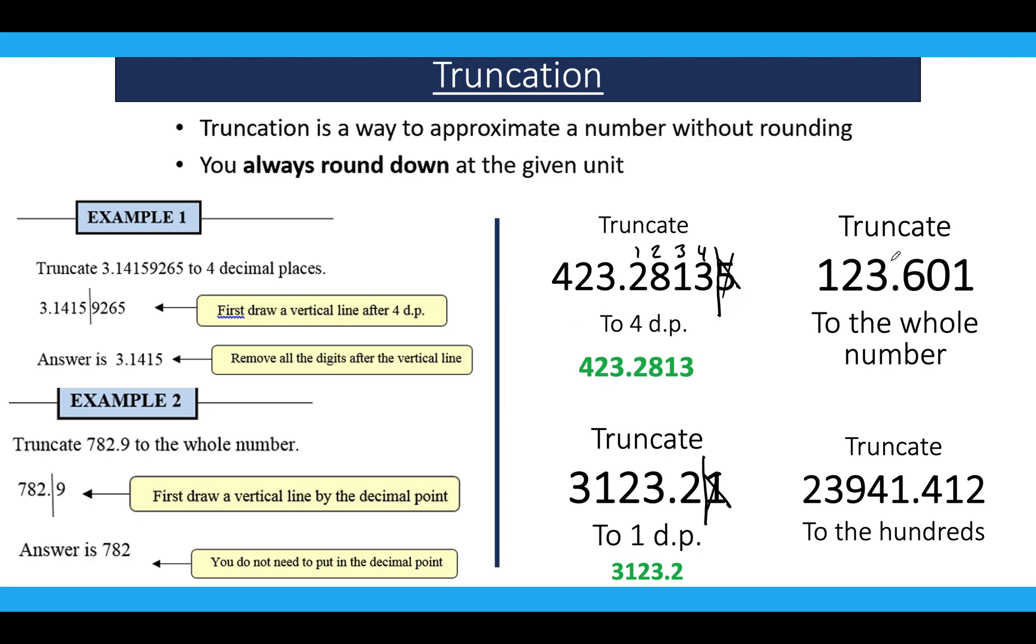Over here to the nearest whole number, we go to the decimal point, we put a line and everything after the decimal point we slice off. Our number would be 123.